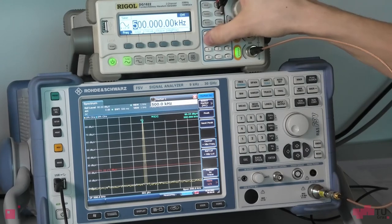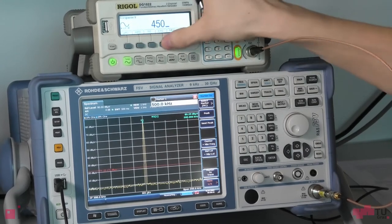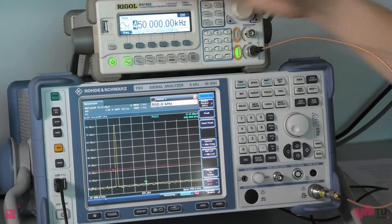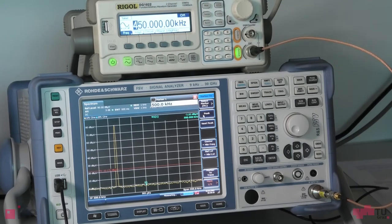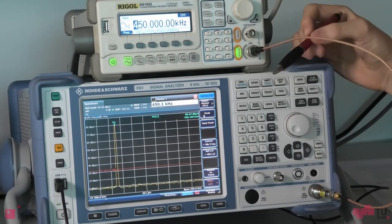So when I set the frequency to 450 kilohertz the peak just jumps over to 450 kilohertz and the amplitude stays the same.